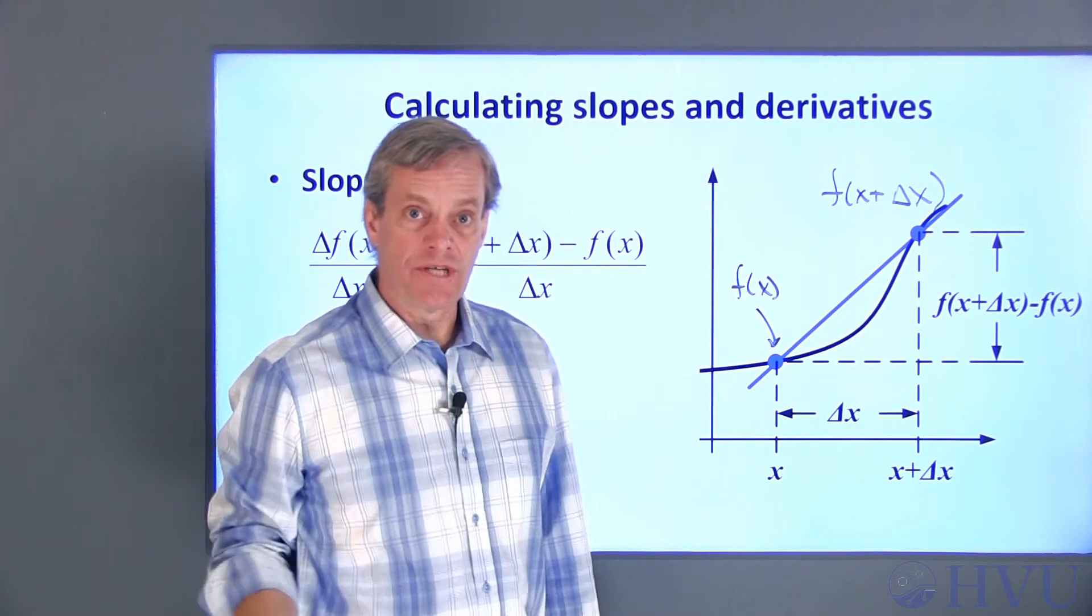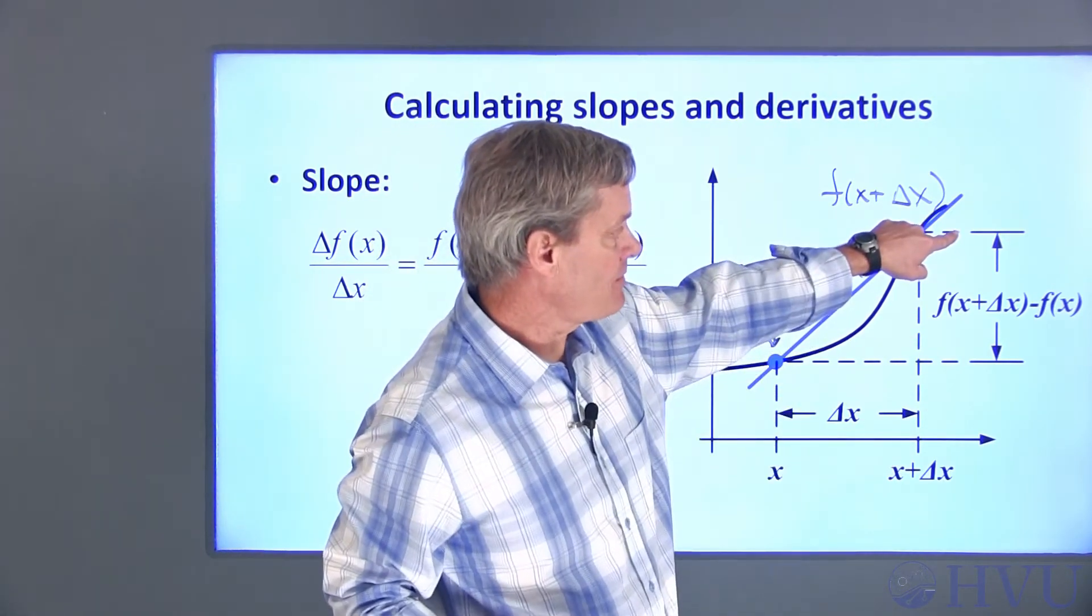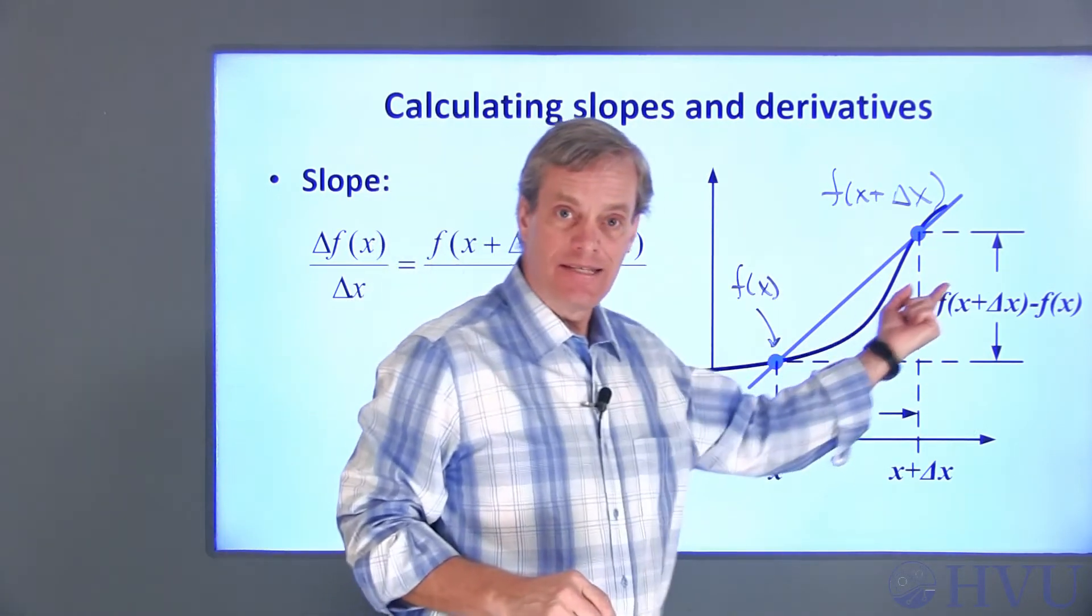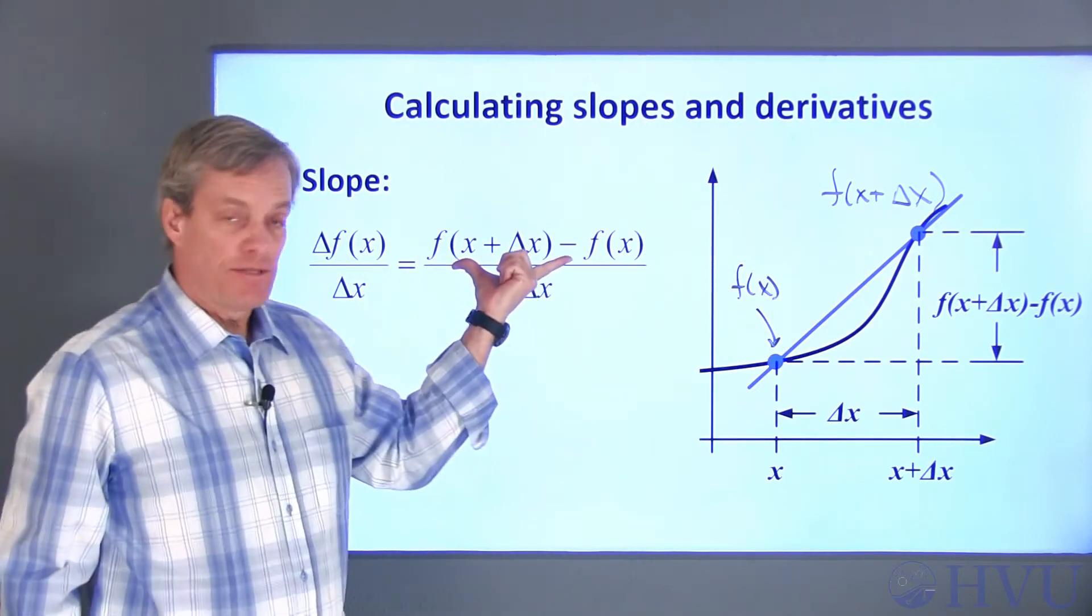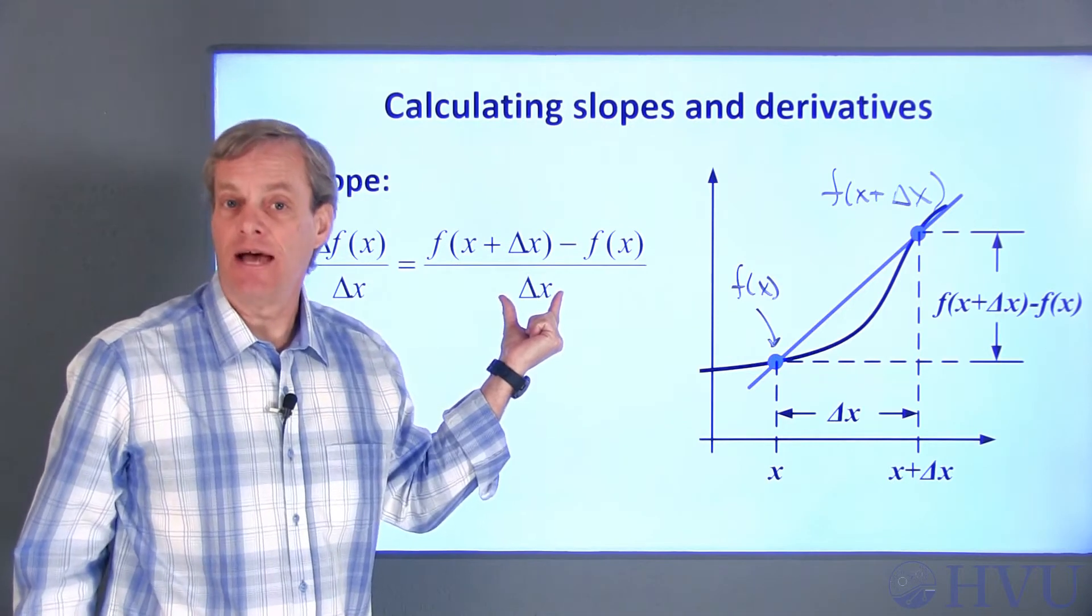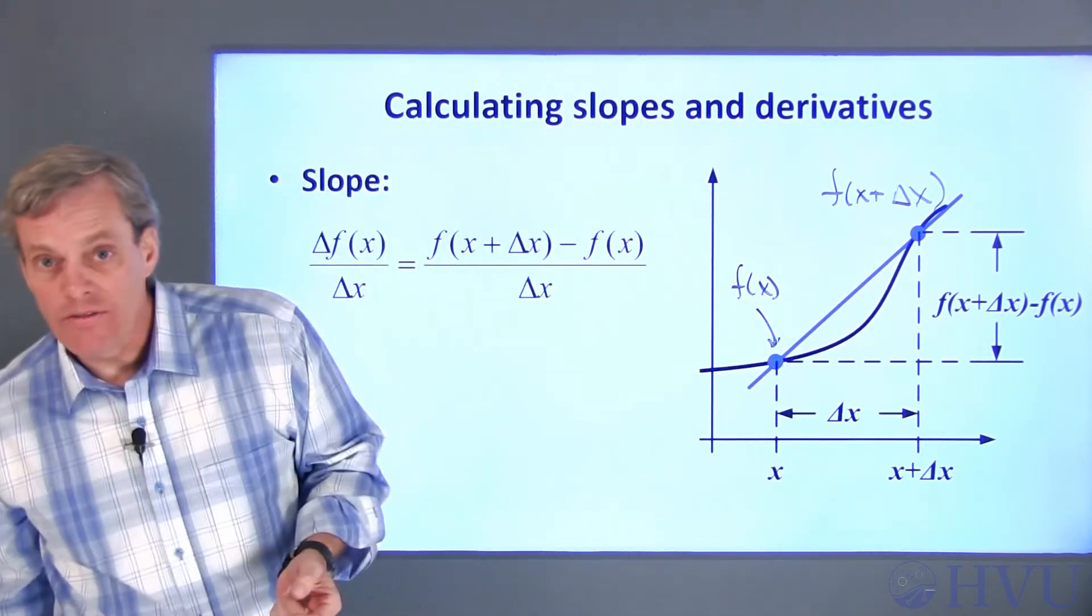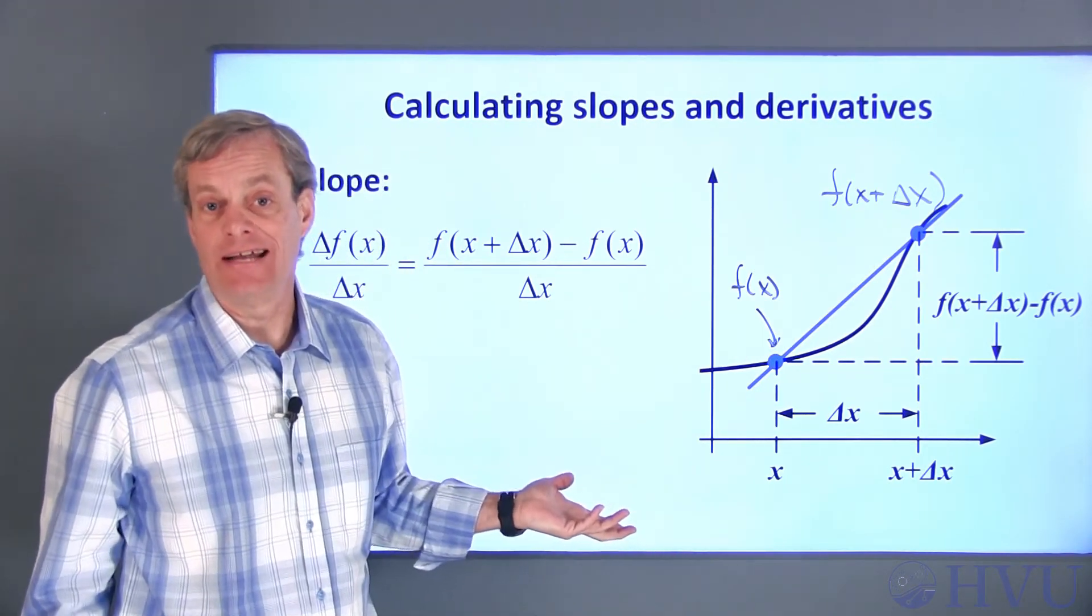So the horizontal distance is delta x and the vertical distance is f of x plus delta x minus f of x. The slope of the straight line connecting these points is the ratio of the vertical distance f of x plus delta x minus f of x to the horizontal distance delta x. With a large delta x as shown here, the estimated slope probably won't be very close to the tangent to the line at x.